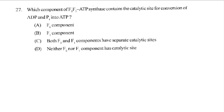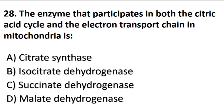Question number 27: Which component of F0-F1 ATP synthase contains the catalytic site for conversion of ADP and phosphate into ATP? The answer is B part: F1 component. Question number 28: The enzyme that participates in both the citric acid cycle and electron transport chain in mitochondria is — the answer is C part: succinate dehydrogenase.